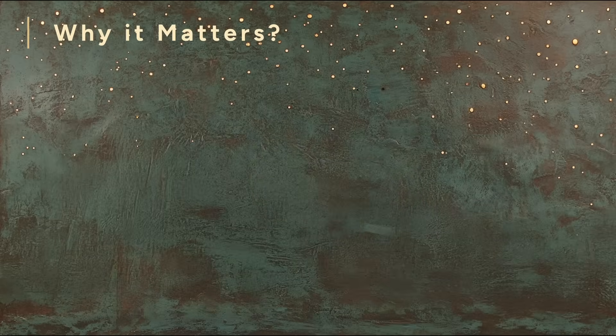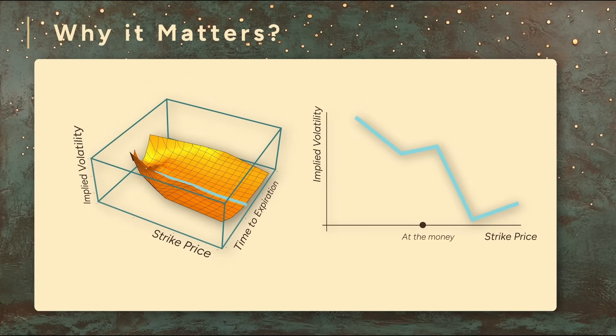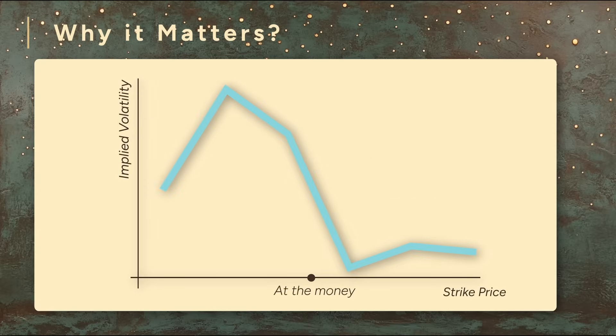When we plot implied volatilities against both strike price and expiration, we don't see a flat sheet. Instead, shapes begin to emerge. Across strike prices, implied volatility often curves upward.